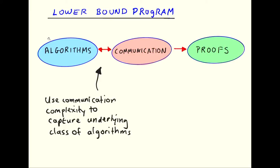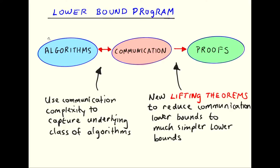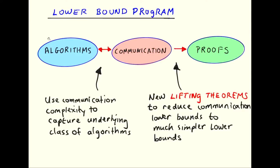What I want to tell you about is this lower bound program where on the left you have the concrete model of computation you're trying to prove the lower bound for — I'm calling that algorithms. In the middle is communication. We're going to convert the lower bound question in the concrete model to a question about communication complexity — an information bottleneck. Then I want to use what I'm calling a lifting theorem, which converts a simple decision tree lower bound into a lower bound for the associated communication problem.